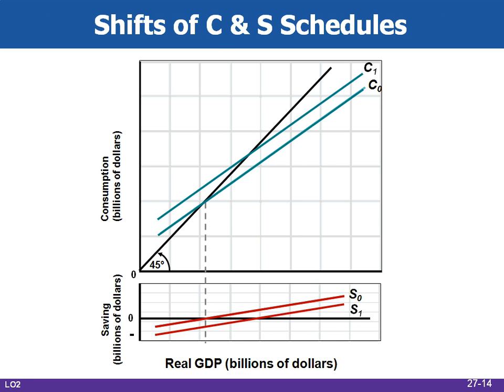This figure shows the shifts of the consumption and savings schedules. If households consume more at each level of real GDP, they are necessarily saving less: an upward shift in the consumption schedule, C0 to C1, entails a downward shift in the savings schedule, S0 to S1. If households consume less, they are saving more: a downward shift C0 to C2 is reflected in an upward shift S0 to S2. This pattern breaks down when taxes change — then the consumption and savings schedules move in the same direction, opposite to the direction of the tax change.